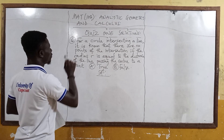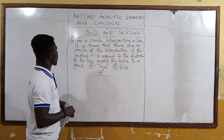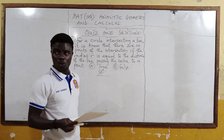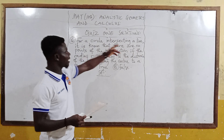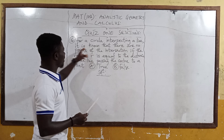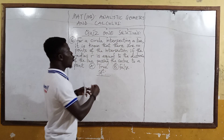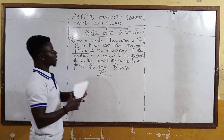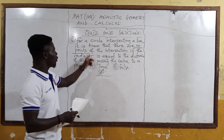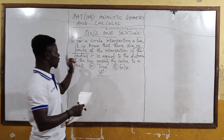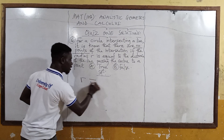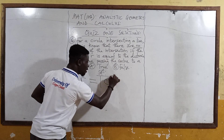Now, we are still working through this solution — question 16 on your question paper. If we are setting a line intercepting a circle, it is known that there are no points of intersection if the radius R is equal to the distance of the line passing through the center to a point. So it means that the radius R is equal to the length of CD.